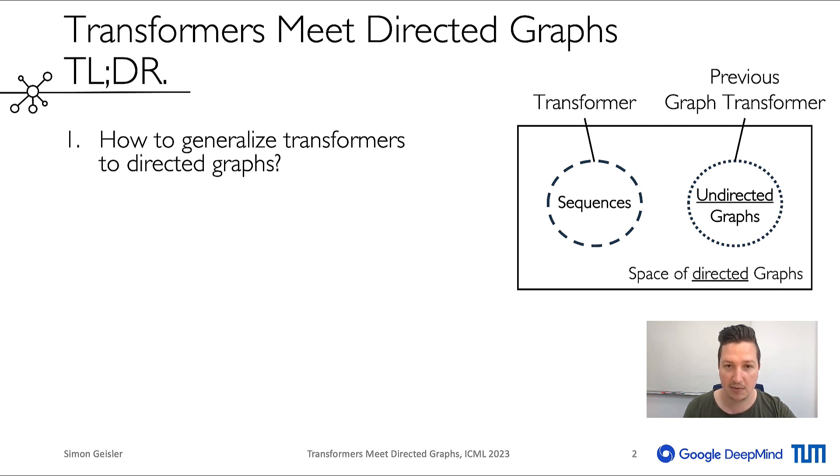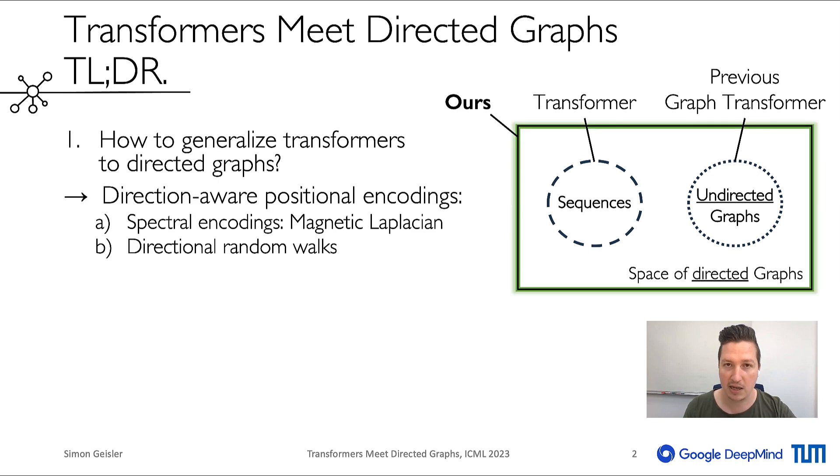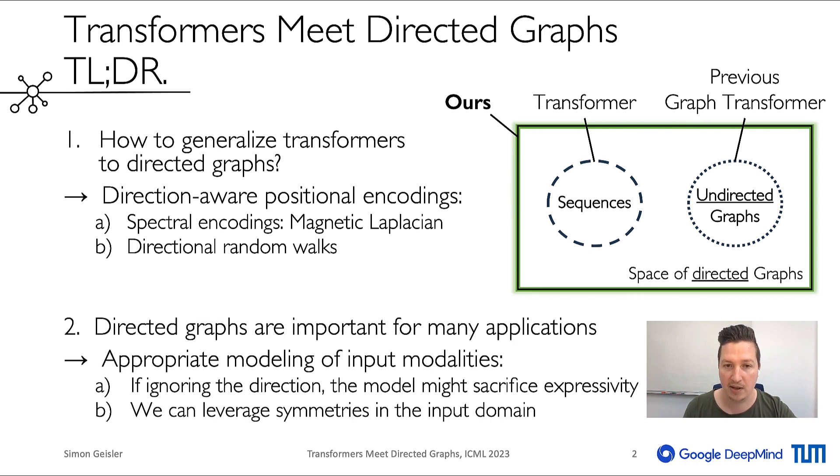However, the set of directed sequences and the set of undirected graphs are disjoint. To close this gap, we propose two direction-aware position encodings. One is based on spectral graph theory and the other is based on random walks. Moreover,